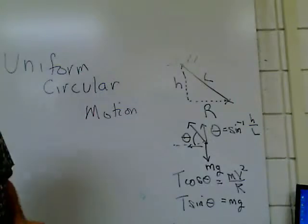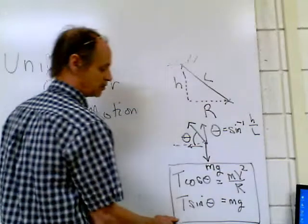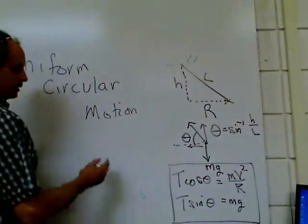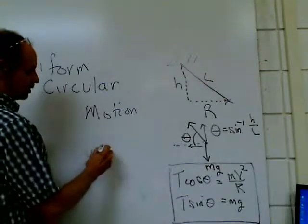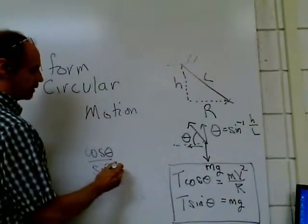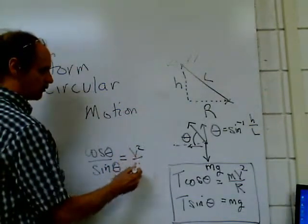If I divide these two equations, the T's will cancel and the m's will cancel. Then we get cosine theta over sine theta equals v squared over rg.